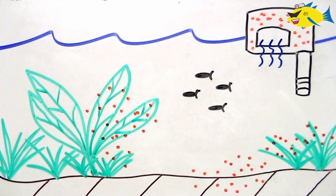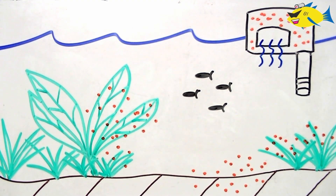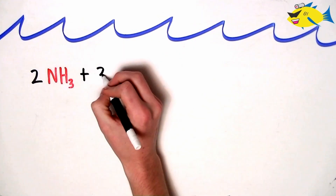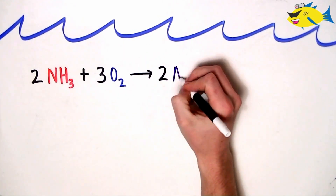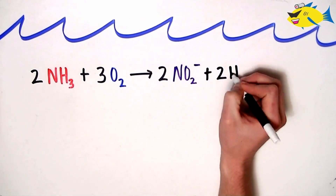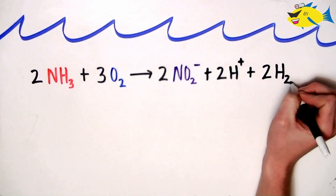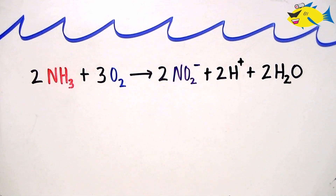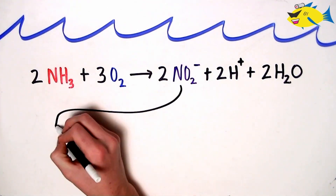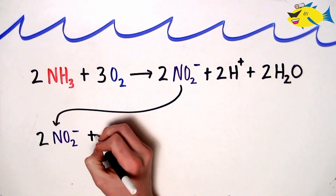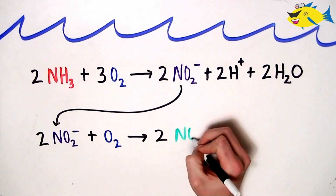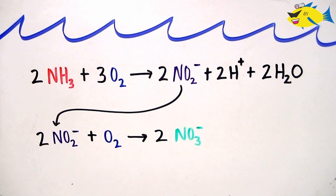This process is called nitrification and it's one of, if not the most important, biochemical pathway in our aquarium. Taking a closer look at the stoichiometry of this process shows that toxic ammonia is oxidized to nitrite and then further oxidized to the relatively non-toxic nitrate.